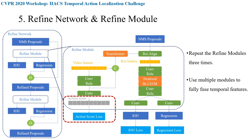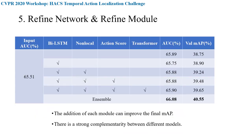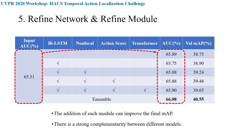Through intermediate supervision, we can further enrich the temporal feature. We assemble multiple BMN models together to generate a large number of higher-quality proposals as input to the refine network. The application of the refine network significantly improved performance, showing that the output of BMN still has a lot of room for optimization. The refine network strengthens the shortcomings of BMN, and they have strong complementarity.